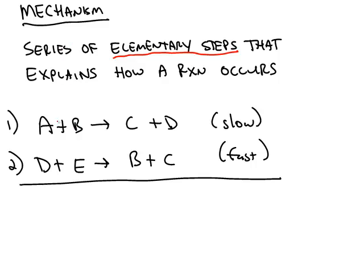So, for example, this mechanism proposes that the first thing that happens is A reacts with B and makes C and D as products. Then, once we make that D, D then reacts in the second step with E to make B plus C.